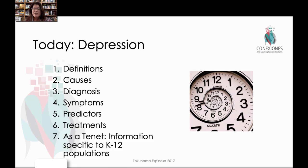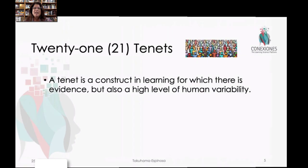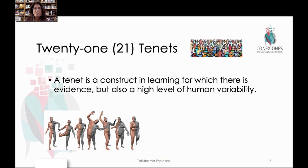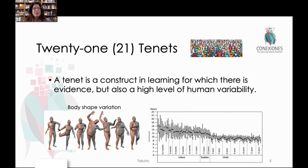Then we're going to look at this in the context of a tenant. Tenants are things that are true about all human brains, but they have a large range of human variation, which is why it's so hard to pin them down and say X equals Y. You can't really do that because there's so much human variation.